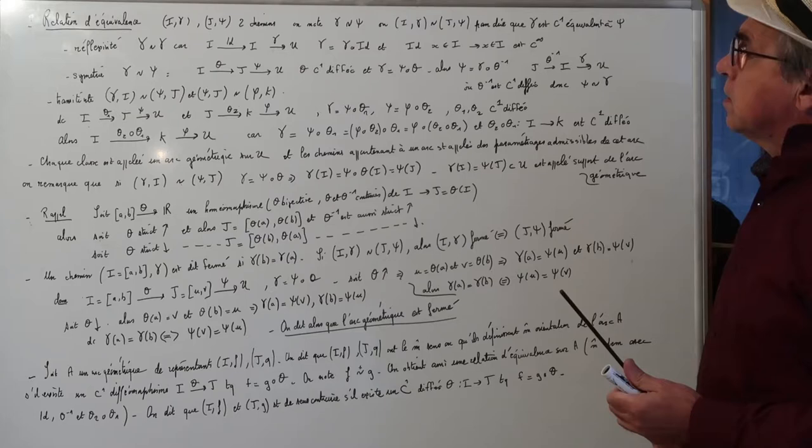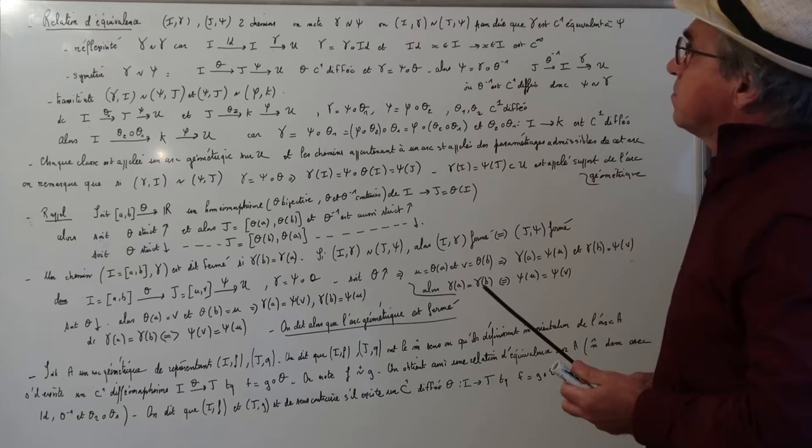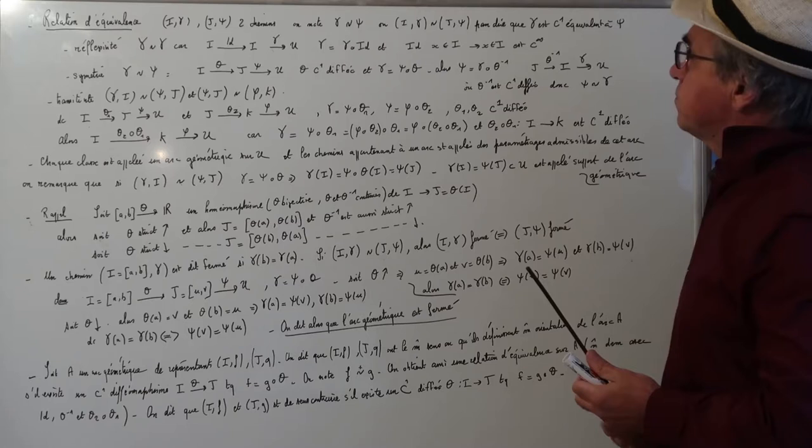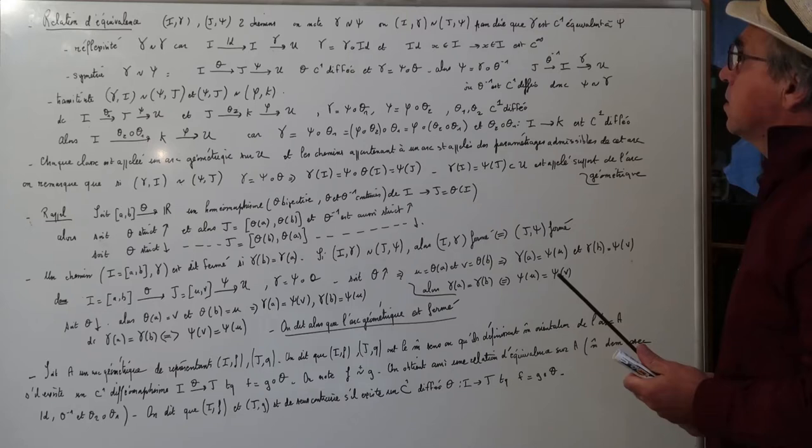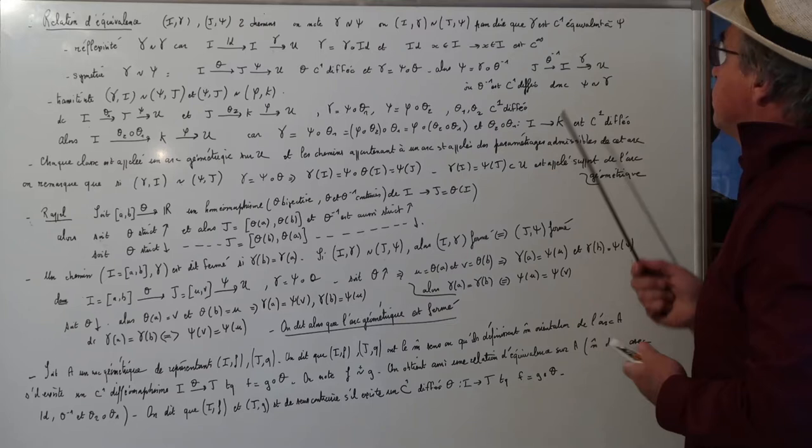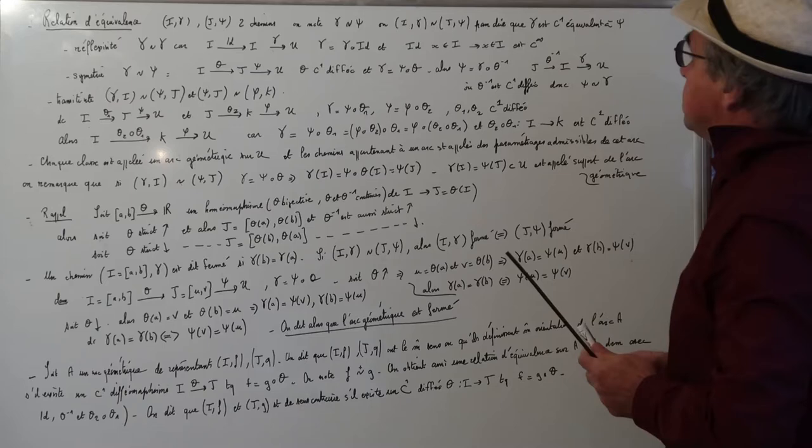Symétrie : γ équivalent à ψ signifie qu'il existe θ un C1-difféomorphisme tel que γ est égale à ψ rond θ. Alors ψ va être égale à γ rond θ⁻¹, θ⁻¹ étant un C1-difféomorphisme de J dans I, et donc on voit que ψ est équivalent à γ.